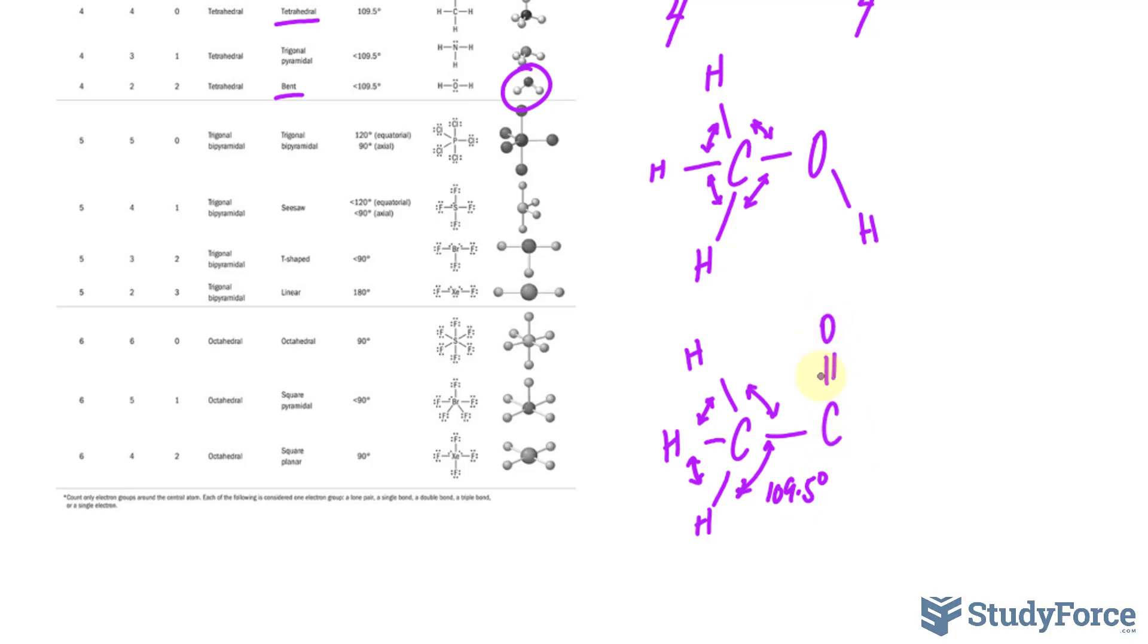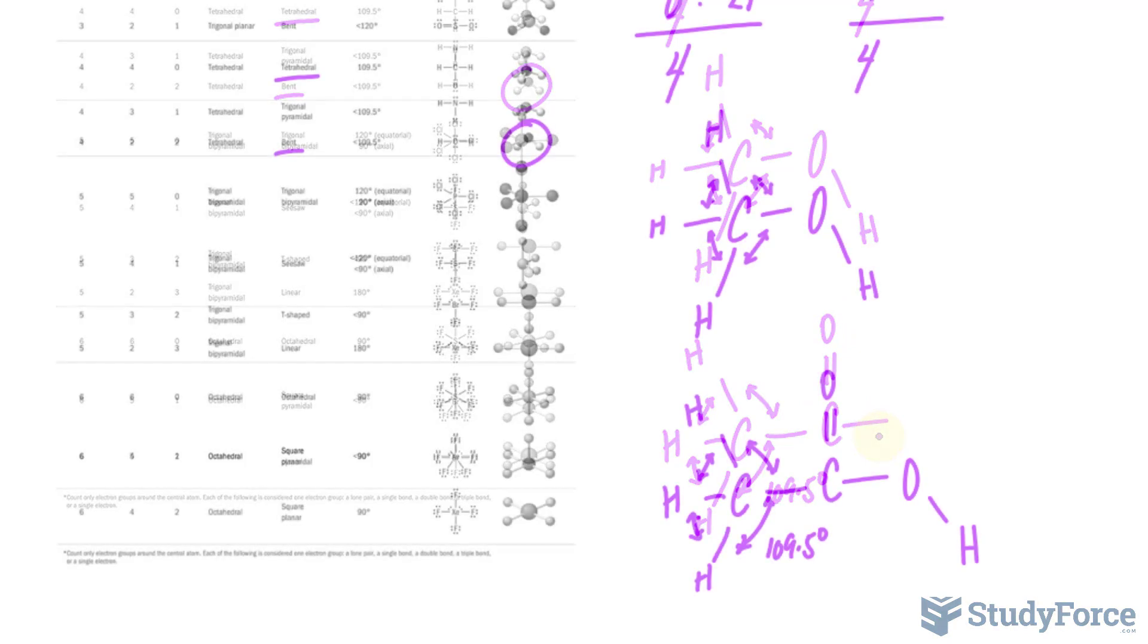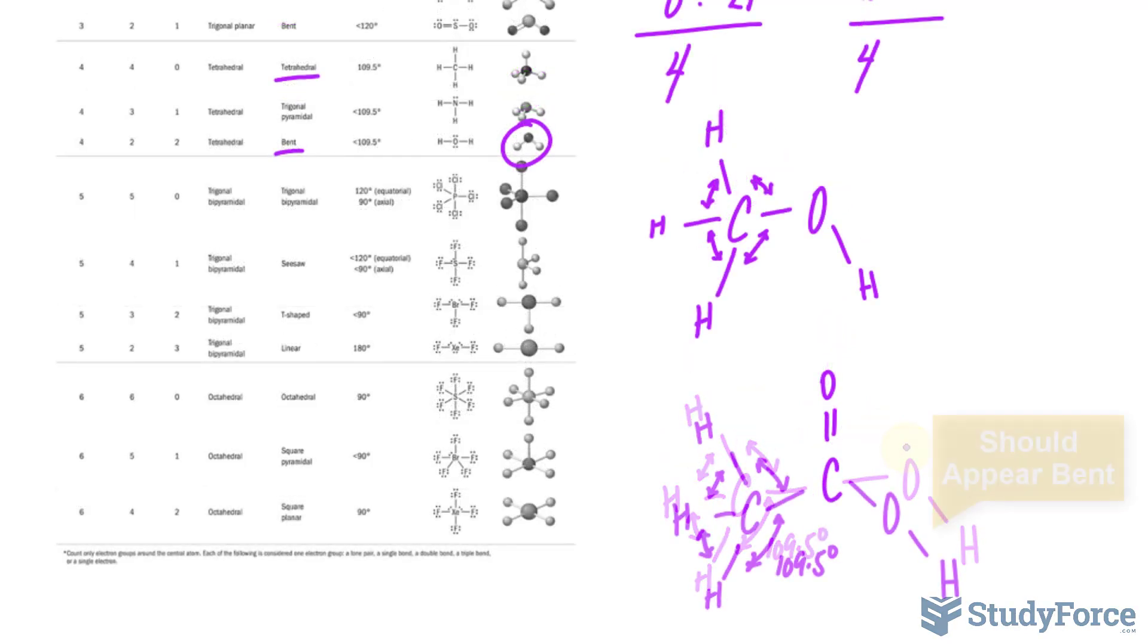That is bonded to another carbon. That's bonded, or double bonded to an oxygen, and that's bonded to OH. Now just to make this more accurate, this should somewhat look like this, where that's 120 degrees, that's 120 degrees, and that is 120 degrees.